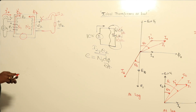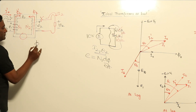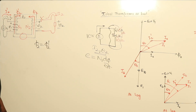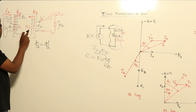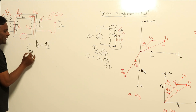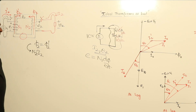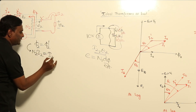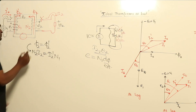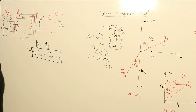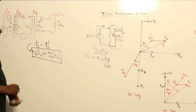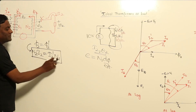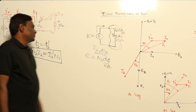φ2 must be compensated by φ2-dash. φ2 is created by the MMF N2·I2, and φ2-dash is created by N1·I2-dash. So the equation is: N2·I2 = N1·I2-dash. In other words, the secondary MMF should be compensated by the primary compensating MMF.